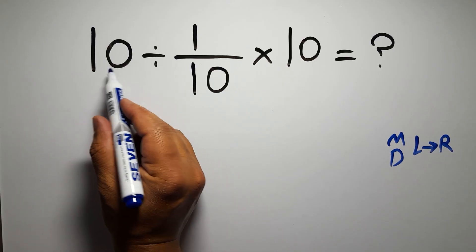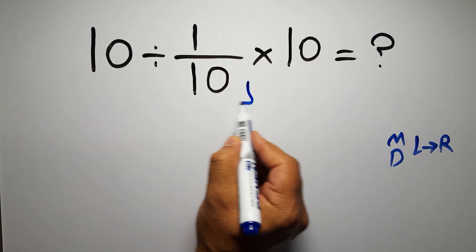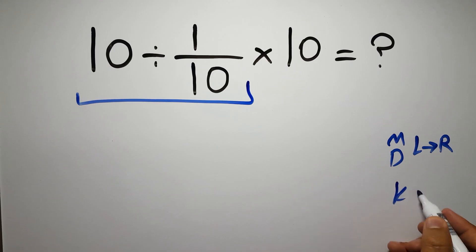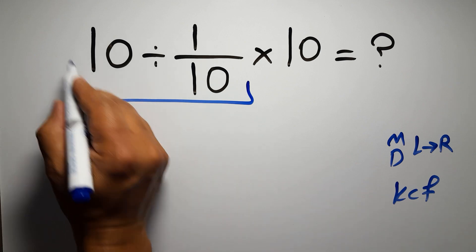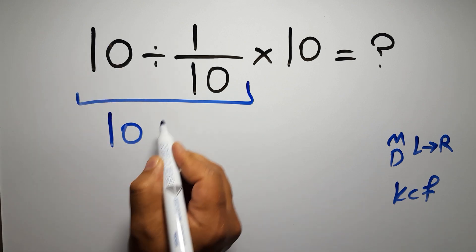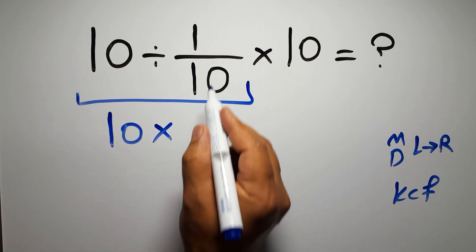So first, 10 divided by 1 over 10. According to the KCF rule—K stands for keep, C stands for change, and F stands for flip—we can write: keep the first fraction, change division to multiplication, and flip the second fraction.